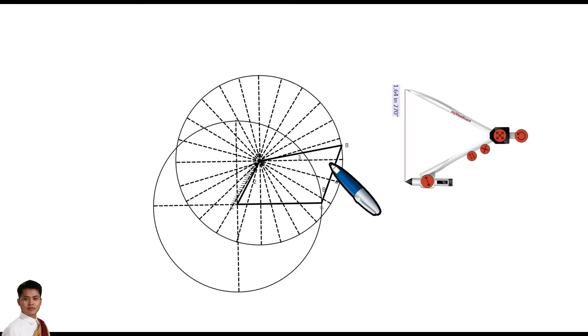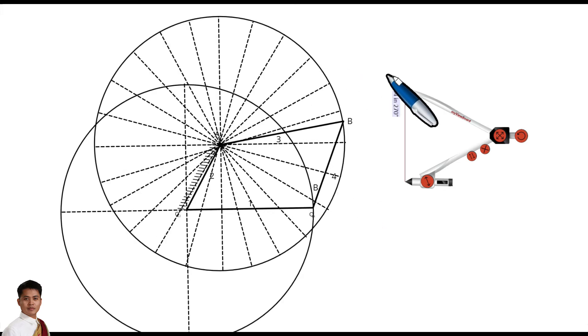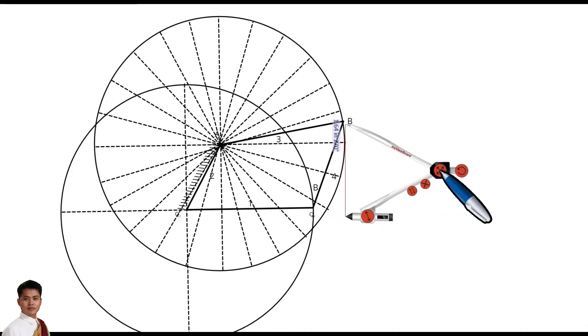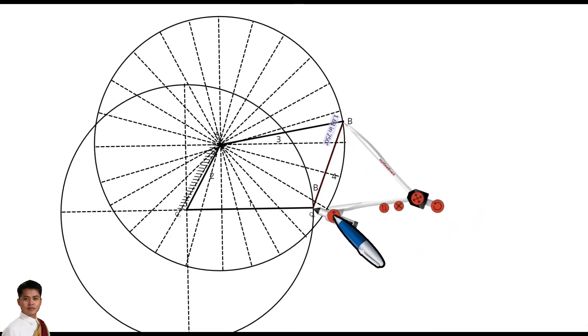And then we are going to determine the path of Q4. So using our compass, we can just simply measure or open our compass in such a way that its distance between the point and the pen is equal to the length of your crank 4. Or we can just simply put the point of the compass here at point B and then put the pen in your Q4.